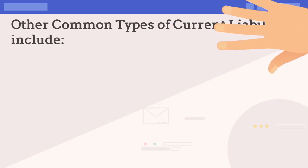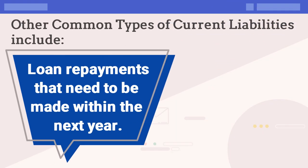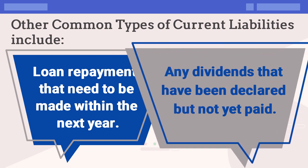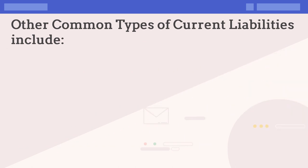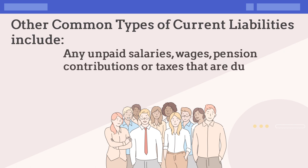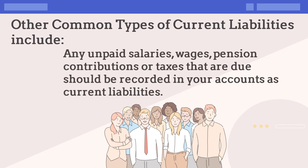Other common types of current liabilities include loan repayments that need to be made within the next year, and for companies, any dividends that have been declared but not yet paid. Finally, if you employ staff, any salaries, wages, pension contributions, or taxes that are due but have not yet been paid should be recorded in your accounts as current liabilities.